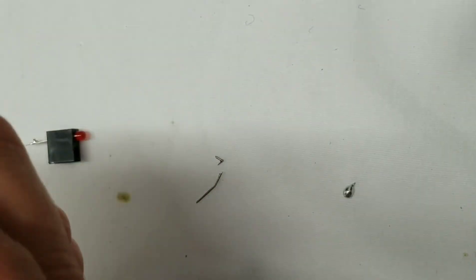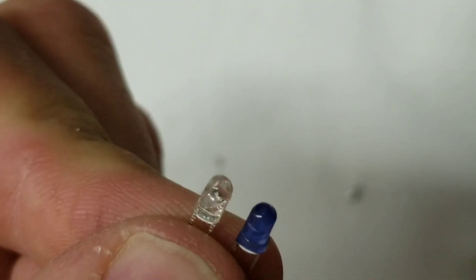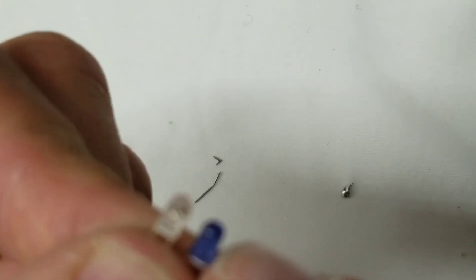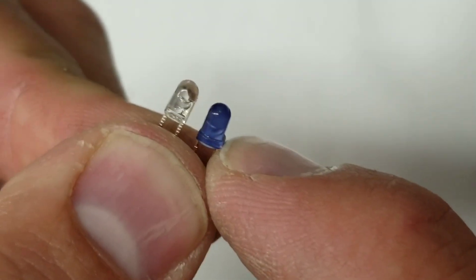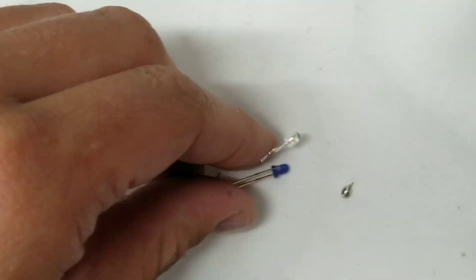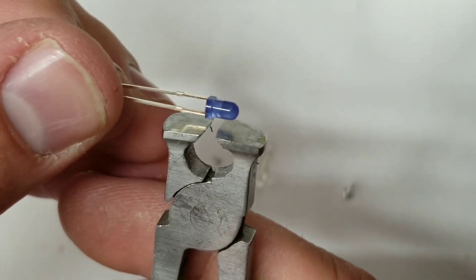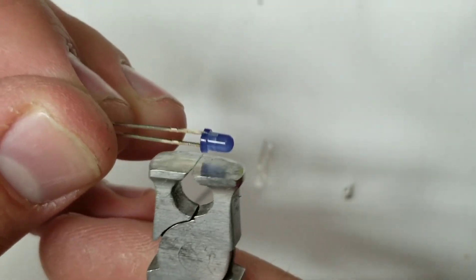Now the biggest thing that you'll notice on these two LEDs, now that we've got them out, is that this one has a bit of a flange on it, whereas this one is nice and straight. It's no big deal, because a tool like this one will make quick work of that little bitty flange.